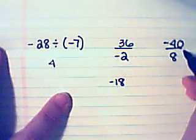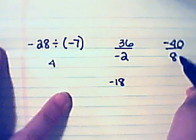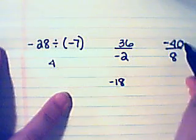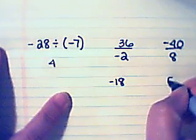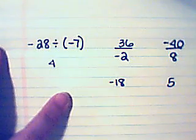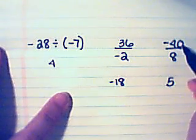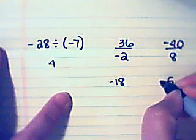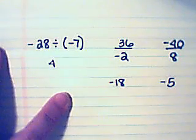Last example. Here I have negative forty divided by eight. Forty divided by eight is five. Since one of my numbers is negative, my answer is also negative. So negative forty divided by eight is negative five.